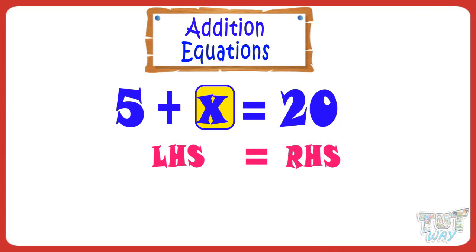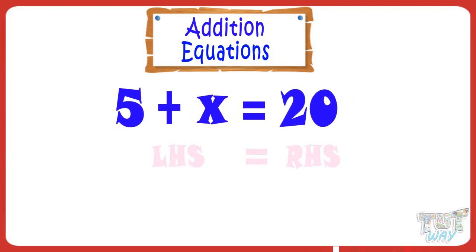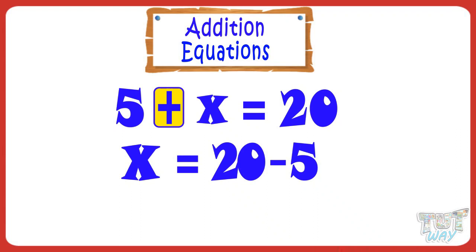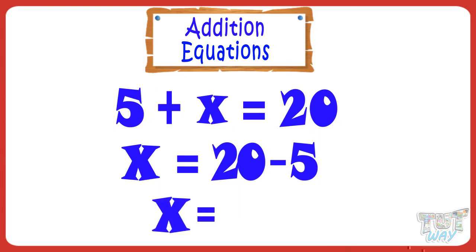We will see many examples to clear our concept, and you will find it very easy at the end. So we have 5 plus X equals 20. Retaining only X on LHS, it becomes X equals 20 minus 5, as the sign before 5 is plus on LHS — no sign means positive or plus — so it will be minus on RHS. 20 minus 5 equals 15, so X equals 15.